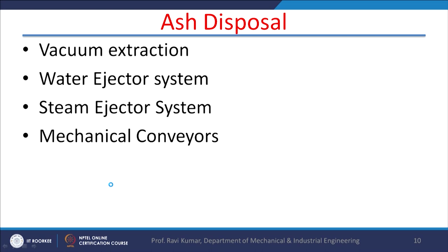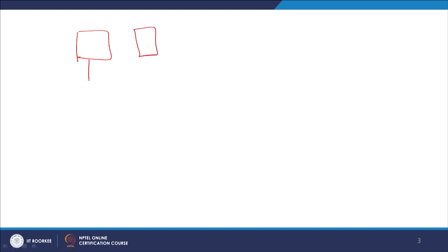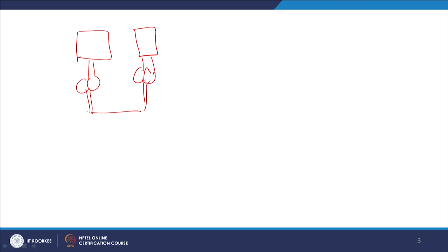For ash disposal, there are four methods: vacuum extraction, water ejector system, steam ejector system, and mechanical conveyors. In the pneumatic ash handling system, ash from the boiler is sent to crushers where it is converted into fine particles, which are then connected to a pipe where high velocity air enters.